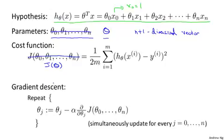Here's what gradient descent looks like. We're going to repeatedly update each parameter thetaj according to thetaj minus alpha times this derivative term. And once again, let me just write this as j of theta. So thetaj is updated as thetaj minus the learning rate alpha times the partial derivative of the cost function with respect to the parameter thetaj.